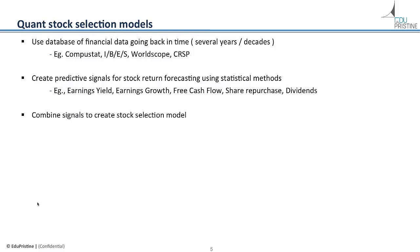This model is run on thousands of stocks to rank them in order of expected future returns. You can get a sense of the work quantitative investors do by looking at academic research papers such as Richard Sloan's paper on accruals or Jegadeesh and Titman's paper on price momentum. Now let's talk about how fundamental investors go about selecting stocks, which is very different from the quantitative approach.